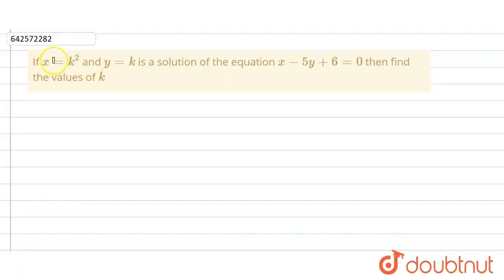In the given question, if x equals k² and y equals k is the solution of the equation x minus 5y plus 6 equals 0, then we have to find the value of k.